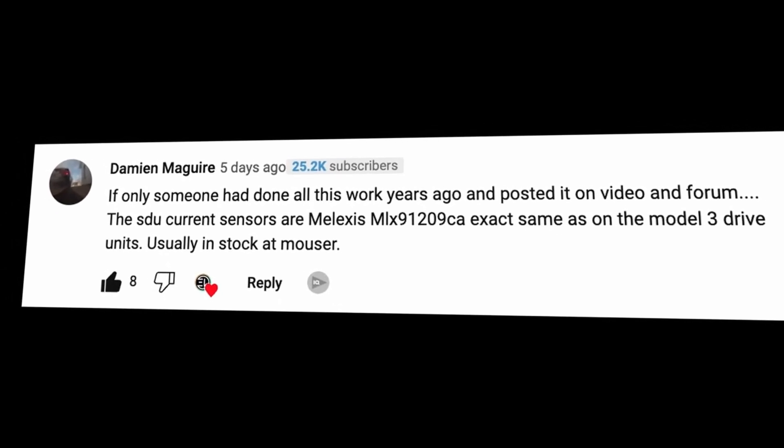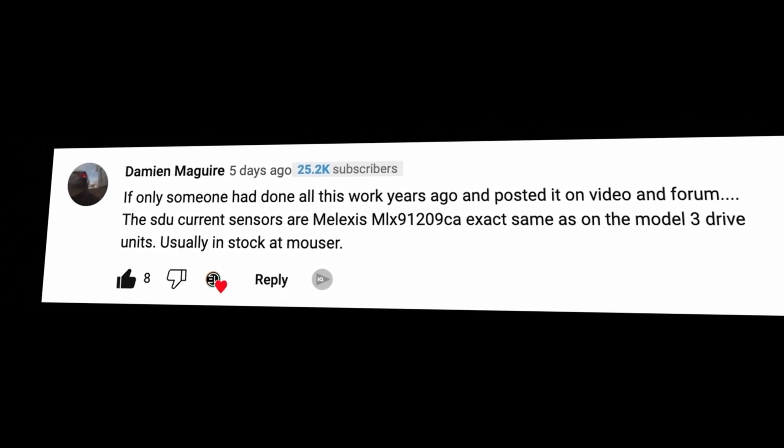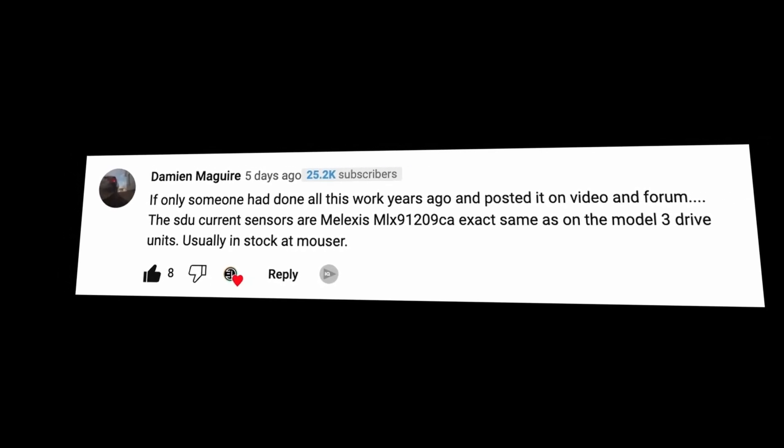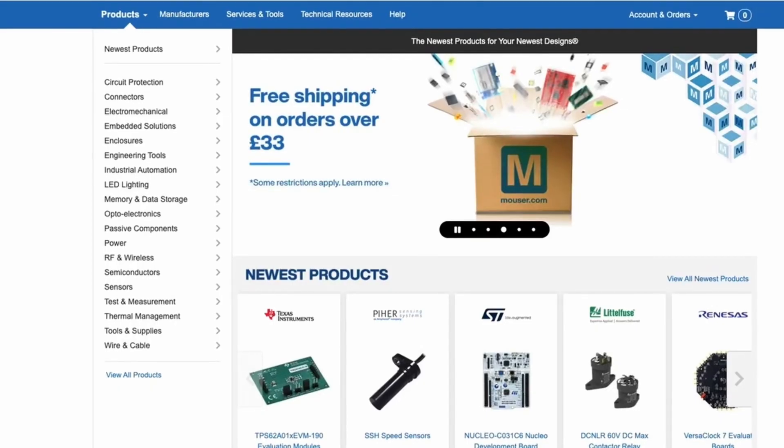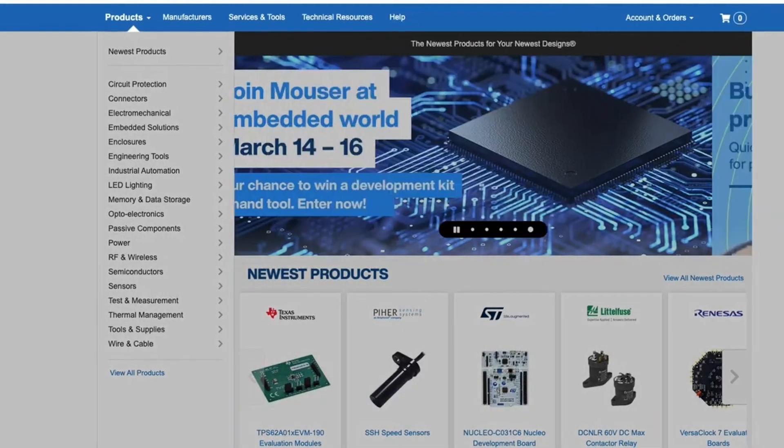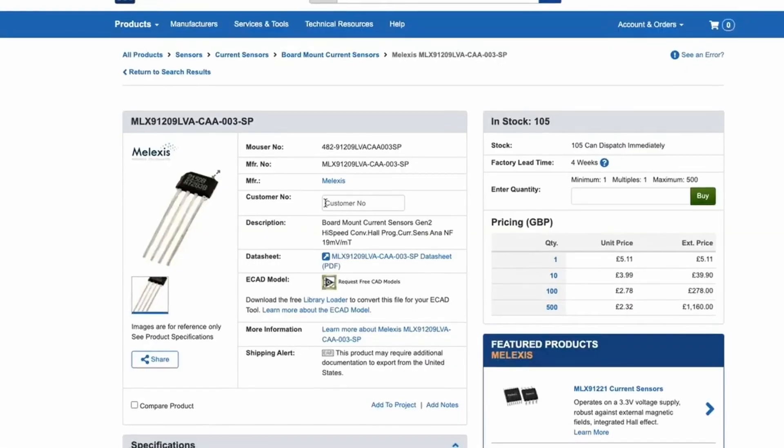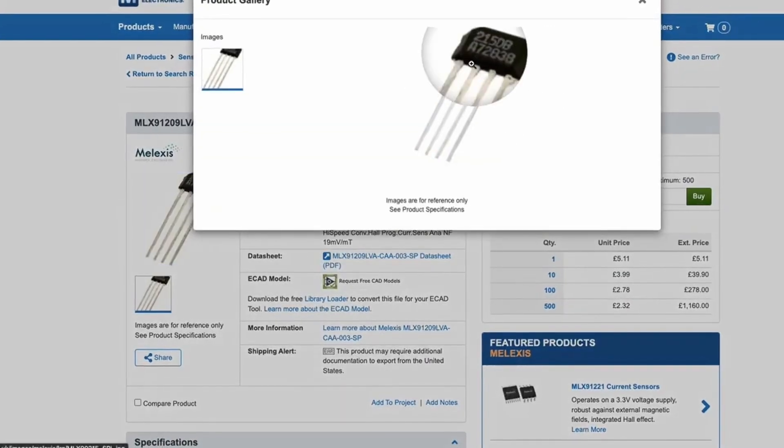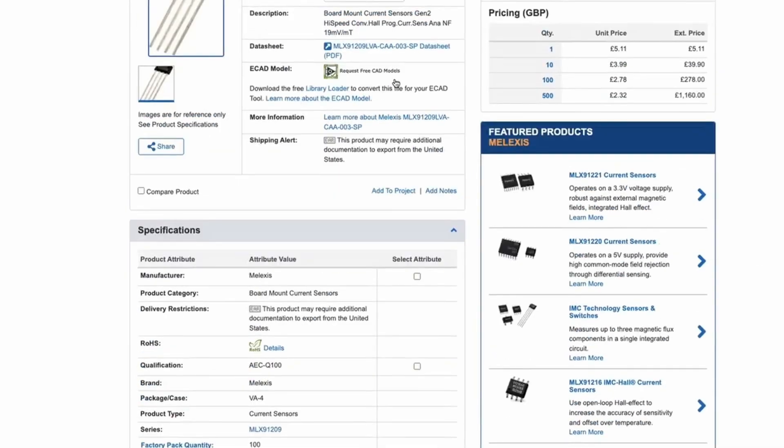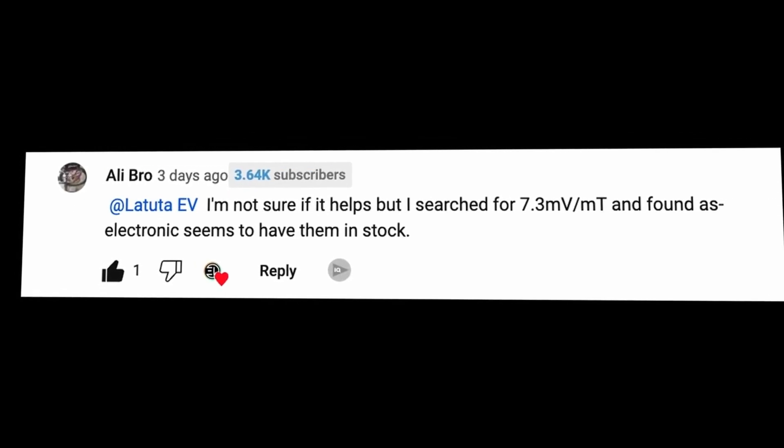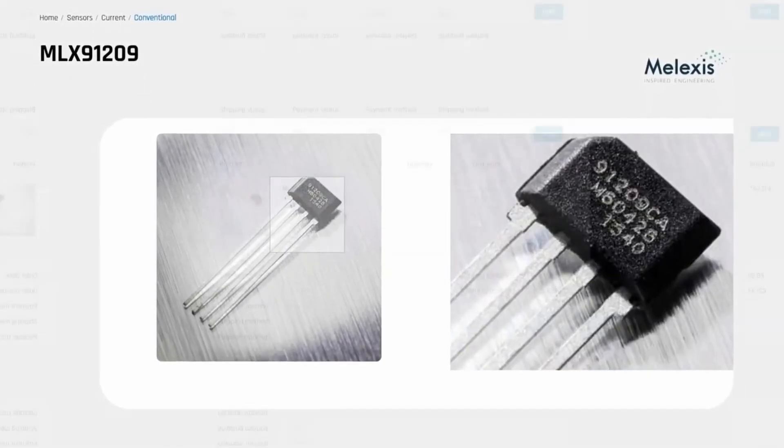The SDU current sensors are the Melexis MLX91209CA, exactly the same as Model 3 drive units, usually in stock at Mouser. I had a quick look on the Mouser website and yes indeed, they were available. The only one little niggle was that the right model was not there. But help came again from fellow EV conversion enthusiasts. I'm not sure if it helps, but I searched for 7.3 mV per mT and found AS Electronic seems to have them in stock. And yes indeed, they were available and I got them.